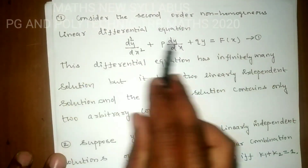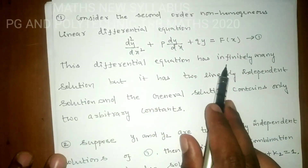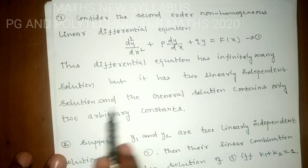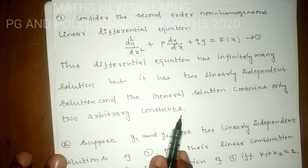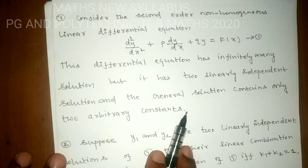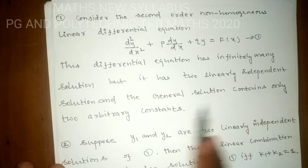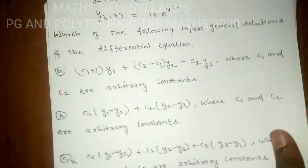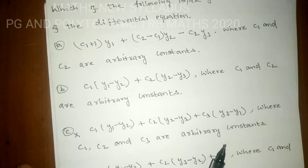For the second-order non-homogeneous linear differential equation, the general solution must contain exactly two arbitrary constants. But Option C contains three arbitrary constants — c1, c2, and c3. Therefore, Option C is not the correct general solution.